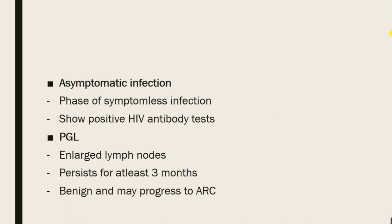The second stage is asymptomatic infection, which is a phase of symptomless infection but the patient sample will show positive HIV antibodies. The third stage is persistent generalized lymphadenopathy or PGL, where the patient manifests with enlarged lymph nodes persisting for at least three months. It could be benign and can progress to AIDS-related complex or ARC.